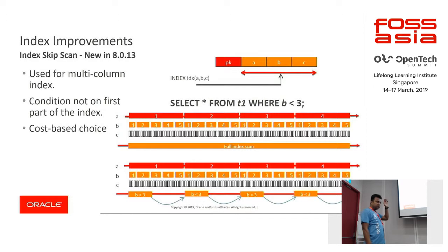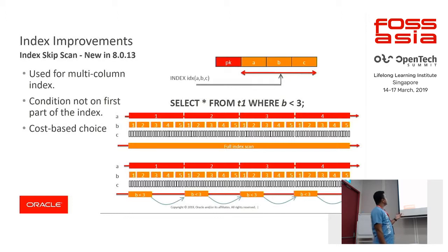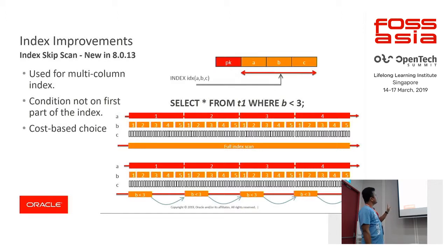I picked this up because it was contributed by Facebook. We picked up their implementation and used it. This is a feature called index skip scan.